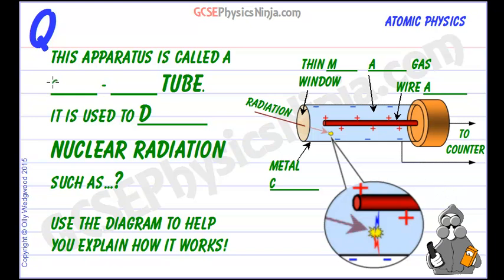This apparatus is called a Geiger-Müller tube or GM tube for short and it's connected to a counter, so it's sometimes called a Geiger-Müller counter or a GM counter.